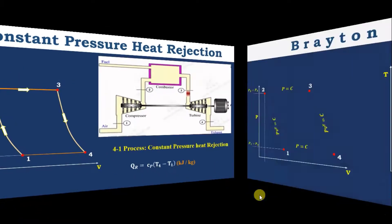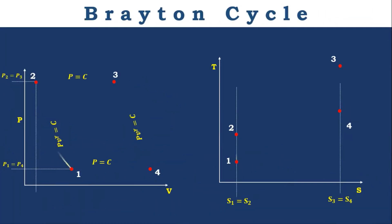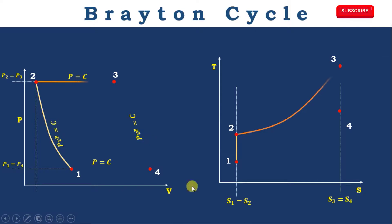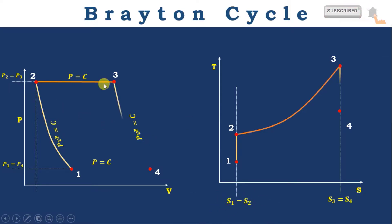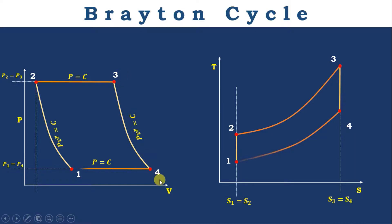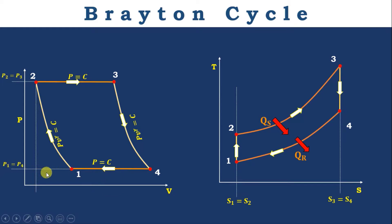Now we will discuss the PV and TS diagrams. Process 1–2 is the isentropic compression process, following PV^γ = constant, with S1 = S2. Process 2–3 is the constant pressure heat addition process, where P2 = P3. Process 3–4 is the isentropic expansion process, with PV^γ = constant and S3 = S4. Process 4–1 is the constant pressure heat rejection process, where P1 = P4.